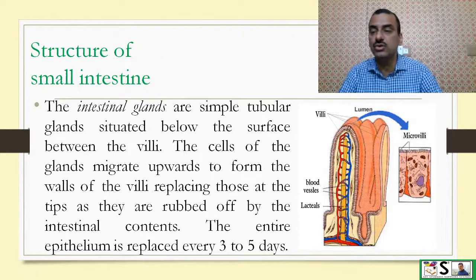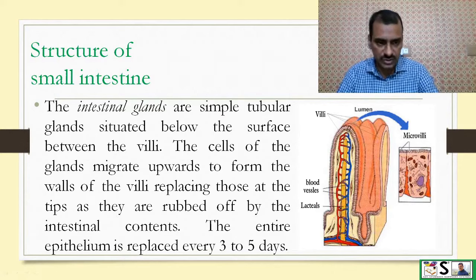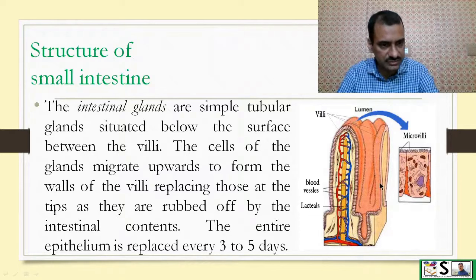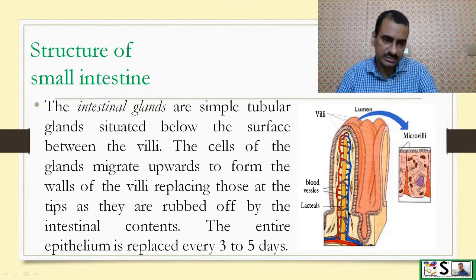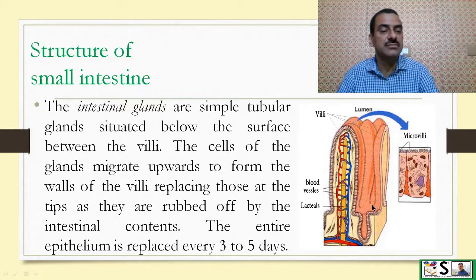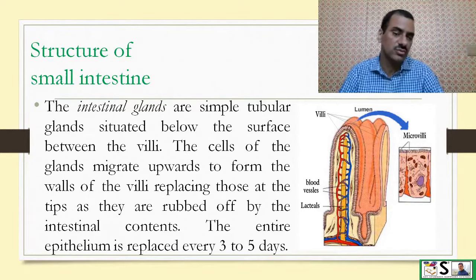The intestinal glands are simply tubular glands situated below the surface between the villi. These gland cells secrete juices and move upwards, and finally when they reach the tip they are shed because of wear and tear, while new cells come from below. The entire epithelium of the small intestine is replaced every three to five days.